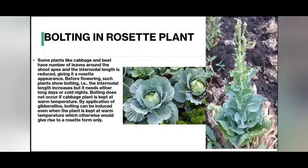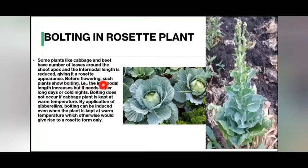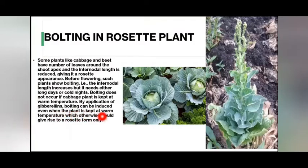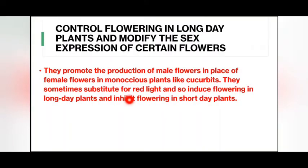Bolting in rosette plants: some plants like cabbage and beet have a number of leaves around the shoot apex and the internodal length is reduced, giving them a rosette appearance before flowering. Such plants show bolting — that is, the internodal length increases — but it needs either long days or cold nights. Bolting does not occur if the cabbage plant is kept at warm temperatures. By application of gibberellins, bolting can be induced even when the plant is kept at warm temperature, whereas otherwise it would give rise to rosette form only.